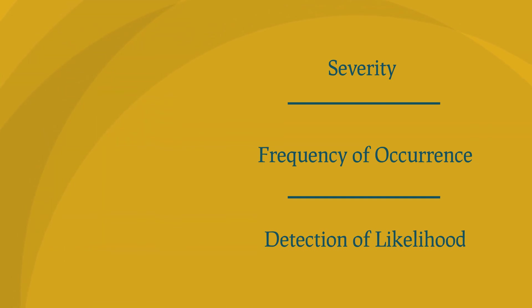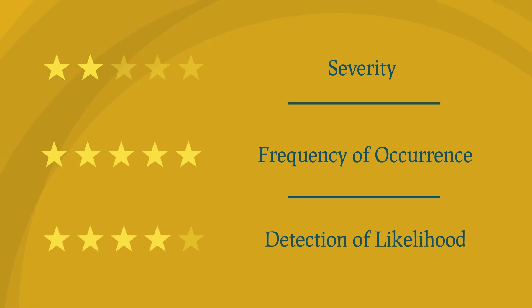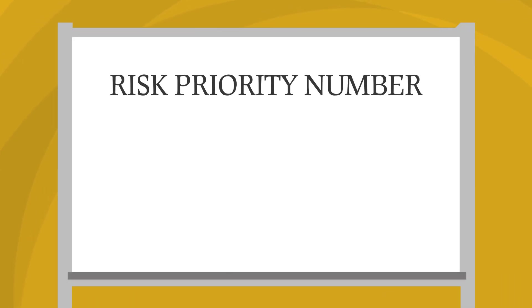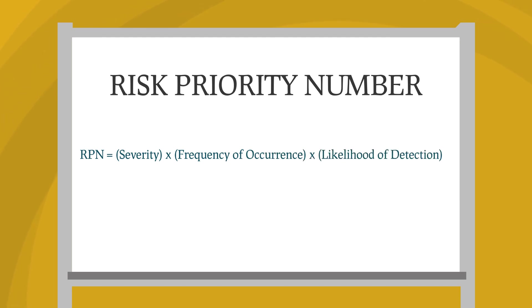Each Failure Mode is scored in these three areas on a scale from 1 to 10 or from 1 to 5. Next, you calculate the Risk Priority Number. The formula is: Risk Priority Number equals Severity times Frequency of Occurrence times Likelihood of Detection.